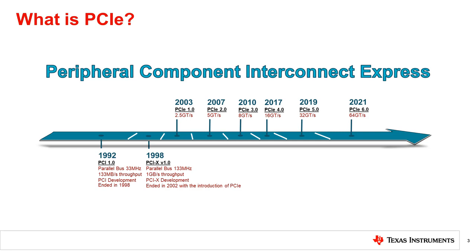In 2021, the PCIe 6.0 specification will be introduced, enabling 64 giga transfers per second, or 64 gigabits per second per lane. One unique feature of the PCIe standard is the ability to increase the number of lanes from one to up to 32 lanes to increase its throughput, a feature inspired by its parallel bus predecessor. A PCIe 6.0 link that is 16 lanes wide would have a data rate of 128 gigabytes per second, which is extremely fast by today's standards.